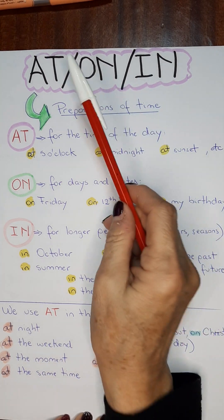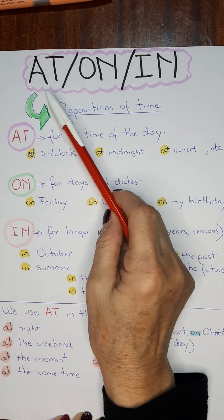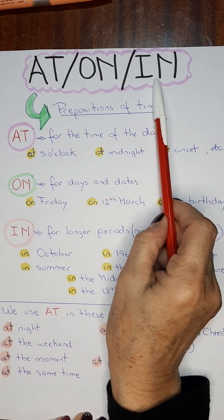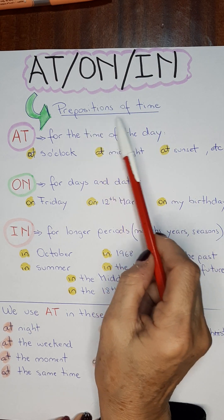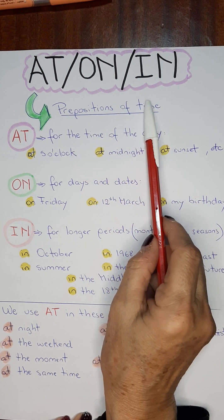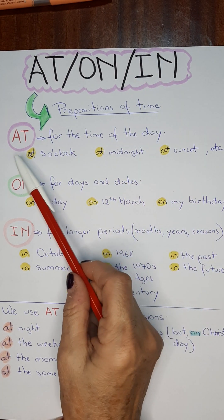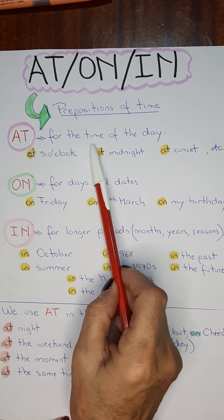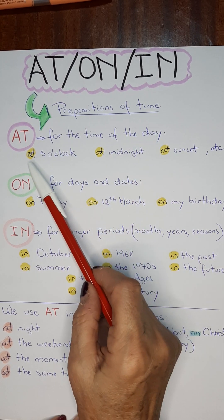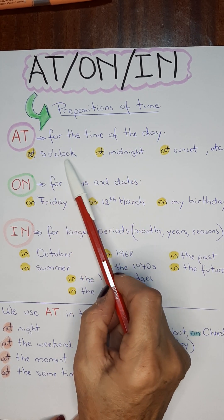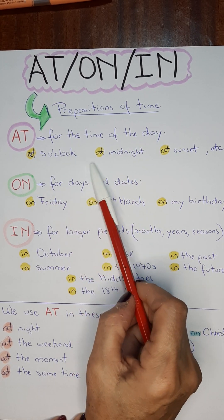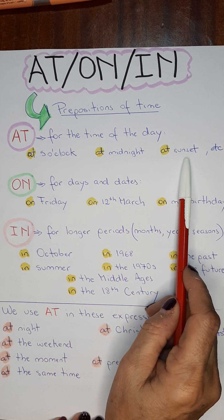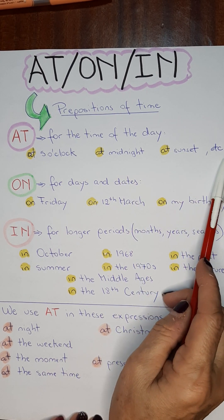We use our prepositions at or in for the time. We use at for the time of the day. For example, at five o'clock, at midnight, at sunset, etc.